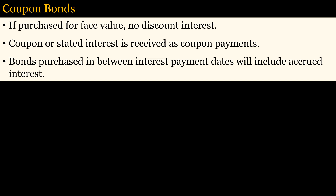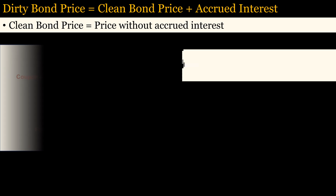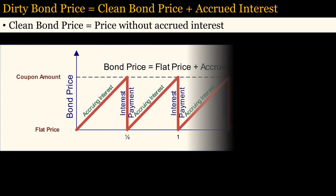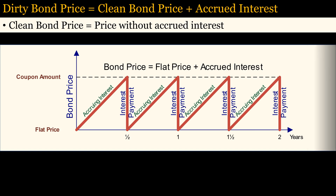The simplest case of bond taxation is that of coupon bonds purchased for face value. Because all the interest is paid periodically, usually semi-annually, there are no discount interest complications. However, bonds purchased in between interest payment dates will include accrued interest. Accrued interest steadily increases until the next payment date, when it drops to zero on that date, then starts increasing again, and so on. Knowing what part of the purchase or sale price is accrued interest is important for calculating taxes.